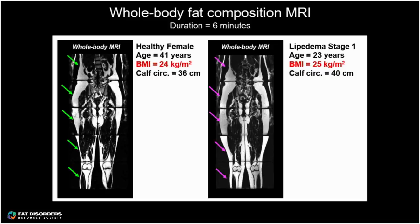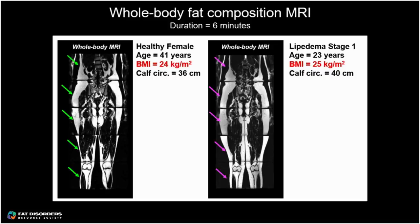Focusing on the calf itself, here are example images with fat tissue shown in white on top and water tissue on the bottom where muscle and skin appear bright. We analyze the volume of fat tissue compared to the volume of water in the tissue to produce a fat-to-water ratio. You can see that value is three times higher in this example patient with lipedema.